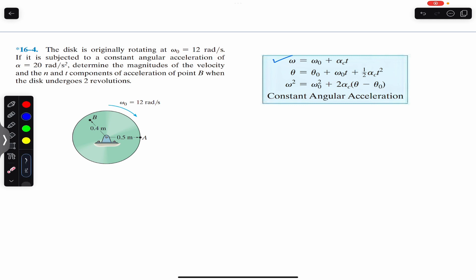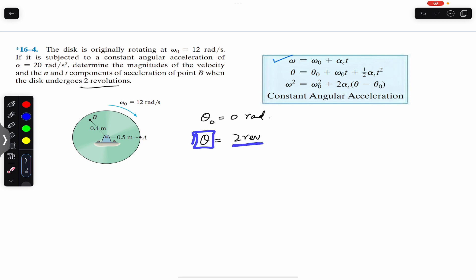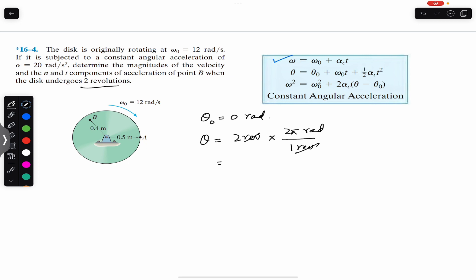We assume that at the start of observation, theta naught equals zero radians. We want to find the velocity and normal and tangential components of acceleration after two revolutions, so the final displacement is two revolutions. Since displacement must be in radians, we convert: one revolution equals two pi radians, so two revolutions equals four pi radians. Therefore theta equals four pi radians.